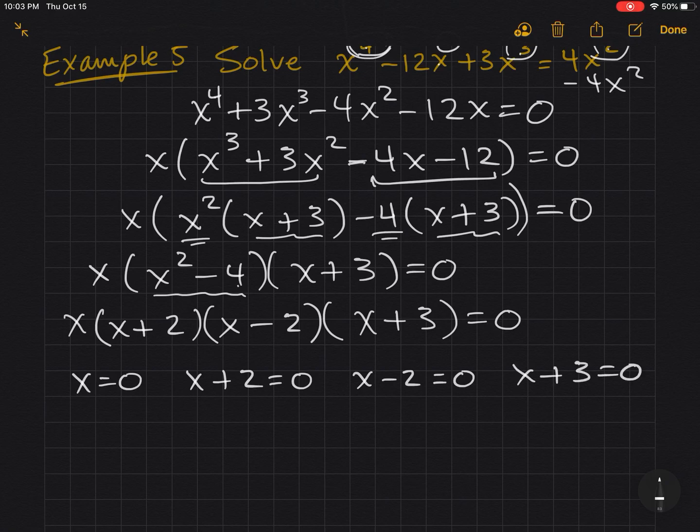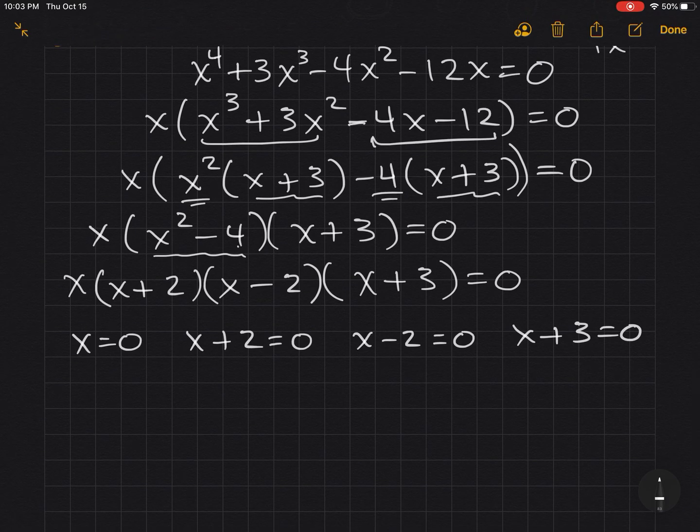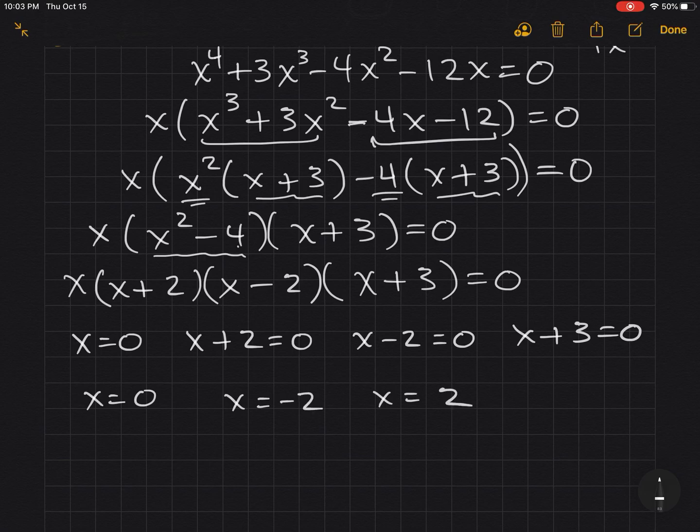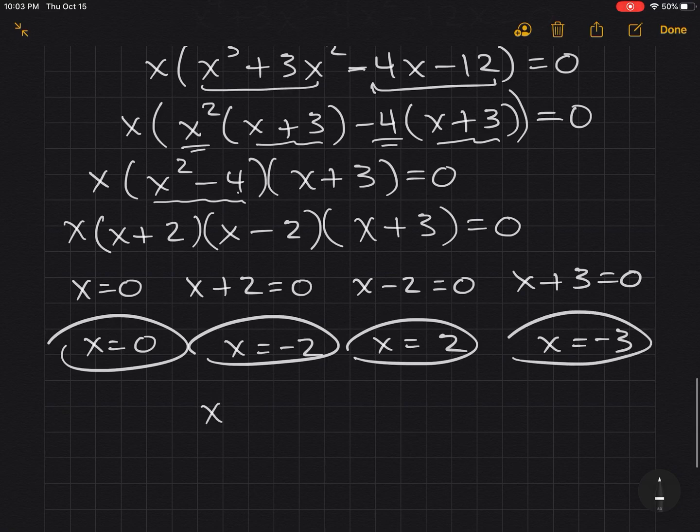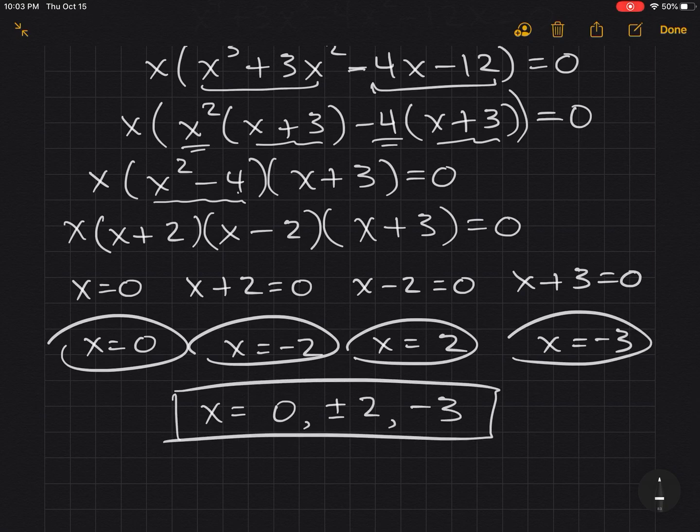If we solve all of those equations, we get zero, negative two, positive two, and a negative three. And, you can leave them separate, or if you're fancy, you can mush it up, zero, plus or minus two, and a negative three. And, you can write your four solutions like that.